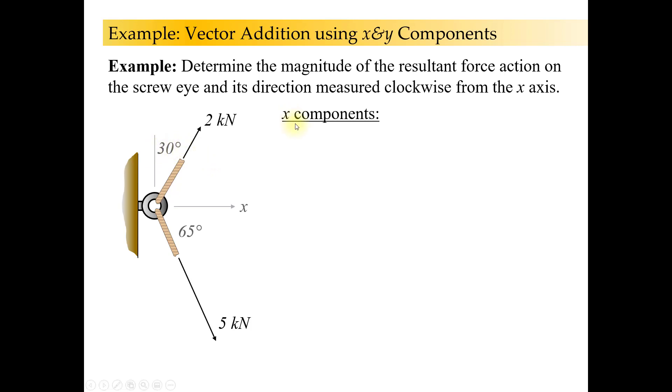X components. So we just calculate the x components of each one. Well, what's the x component of the 2 kilonewtons going to be? Do I need to use cosine or sine? Say it out loud. I want to hear it. Oh wait, I'm not actually in the room with you. But you said something. What did you say? Did you say cosine or did you say sine?